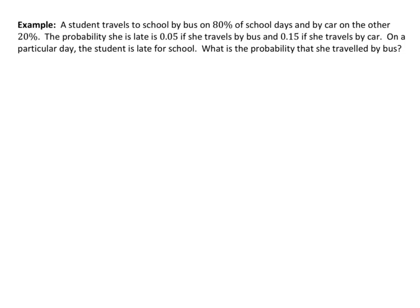Without telling you anything else about Bayes' Theorem, we're going to dive right into an example. I want you to see that using the principles we already know about probability, we kind of already know how to solve these problems. In this example, a student travels to school by bus on 80% of school days and by car on the other 20%. The probability that she's late is 5% if she travels by bus and 15% if she travels by car.